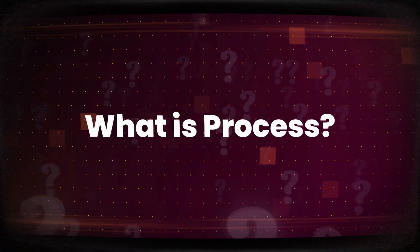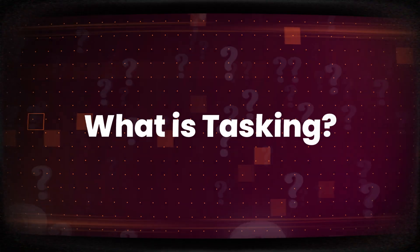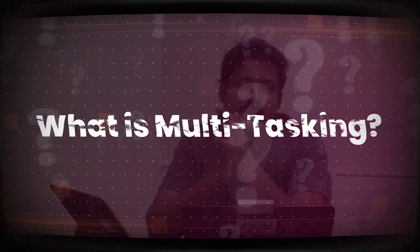I want you to understand what a process is and what a thread is. It is really important to understand what tasking and multitasking mean. A process is any running application — for example, if you have notepad.exe running in your system, it's called a process. This process can have threads running on the backend. A functional call can be a thread as well. There can be multiple threads that are part of a particular running process.